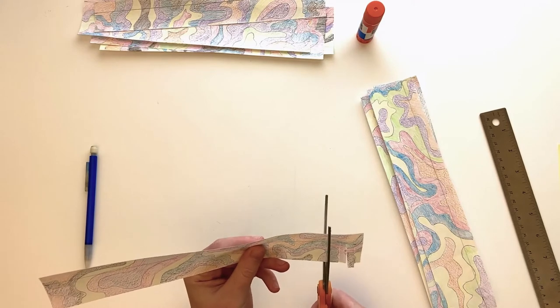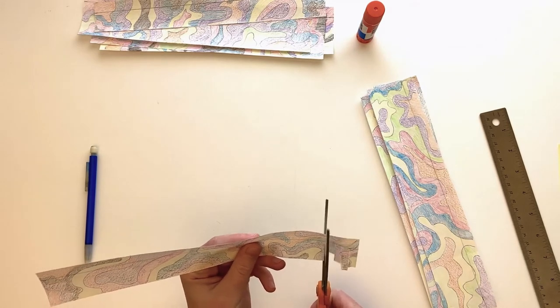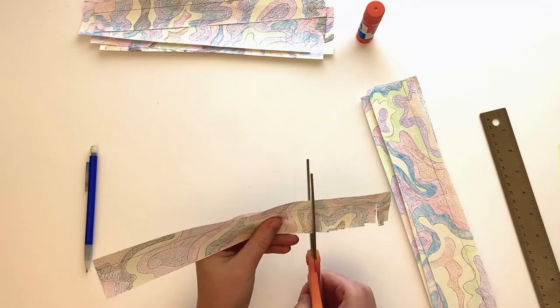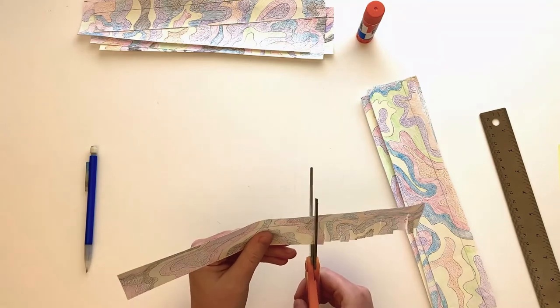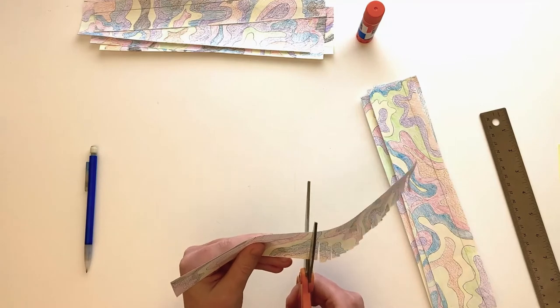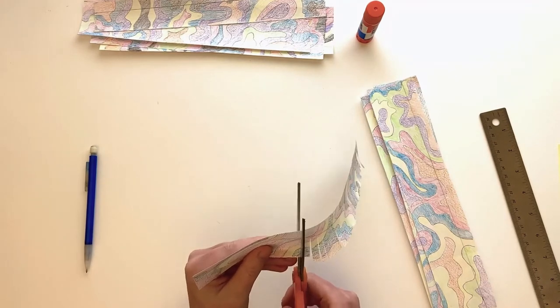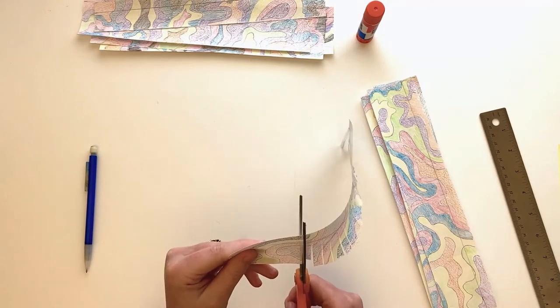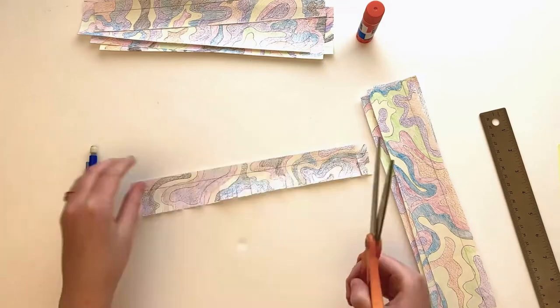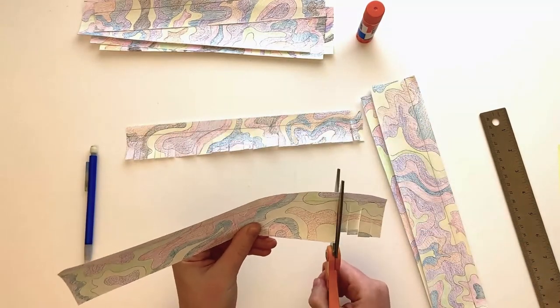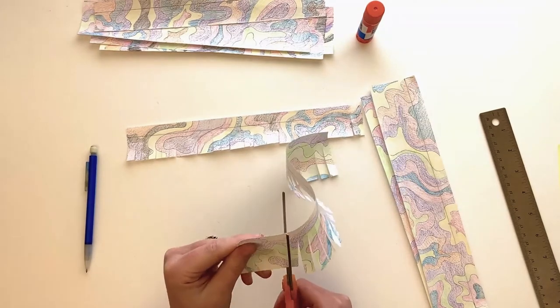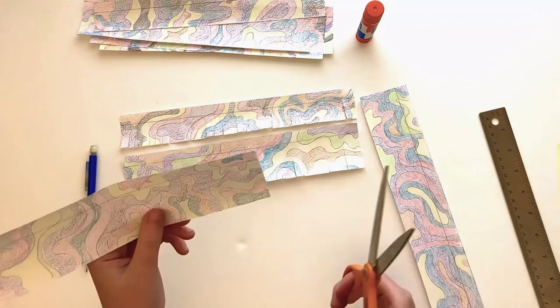Use scissors to cut vertical strips into the paper, stopping at the line. This will give your cuffs fringe. Do this on all pieces.